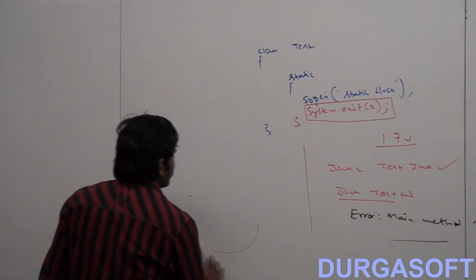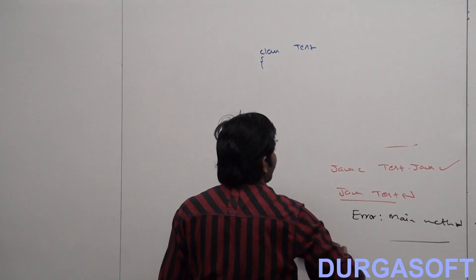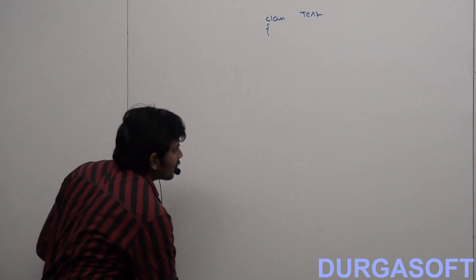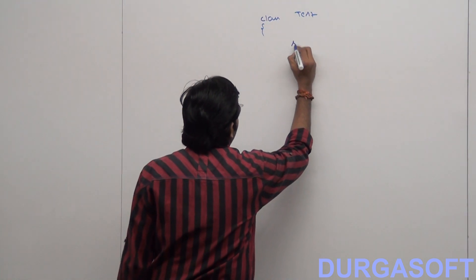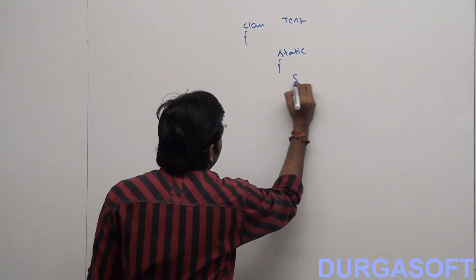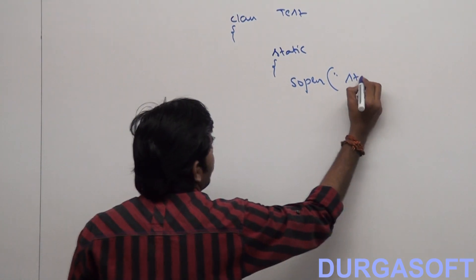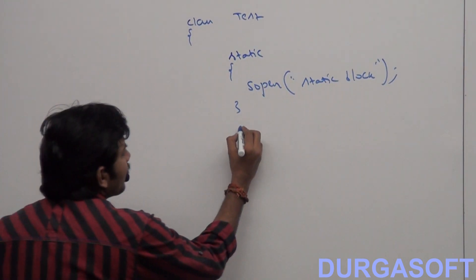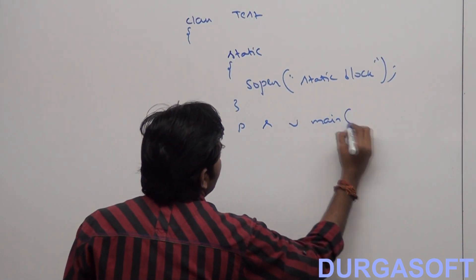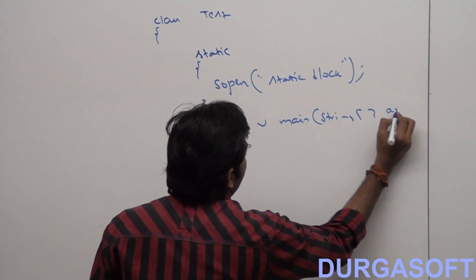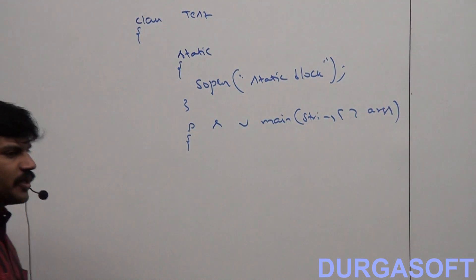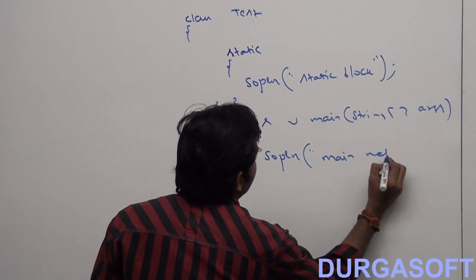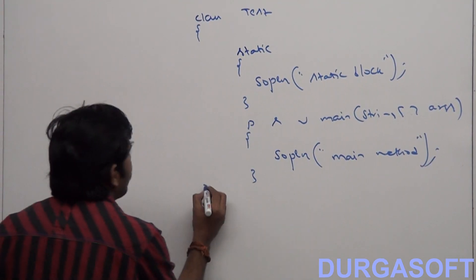Example 3 — this example is very very important. Make sure you have clear clarity. Here, most people have a bit of confusion. Class ATest: within that, I am taking a static block with System.out.println('static block'), and also the main method — public static void main(String[] args) with System.out.println('main method').